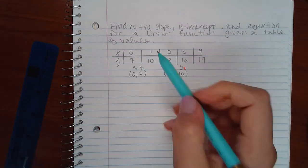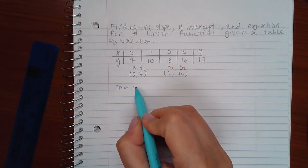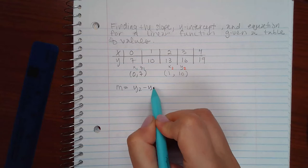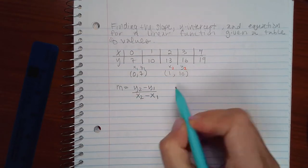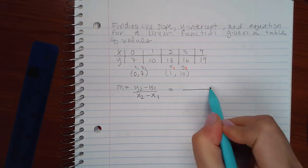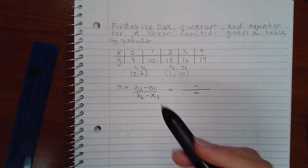Now, to find the slope, you need to know your formula for slope. So, y2 minus y1 over x2 minus x1. There is a minus sign in the formula, so I'm going to leave that just like that.